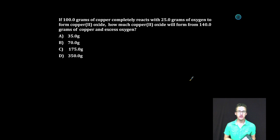Let's take a look at another thriller multiple choice. If 100 grams of copper completely reacts with 25.0 grams of oxygen to form copper 2 oxide, how much copper 2 oxide will form from 140 grams of copper and excess oxygen?